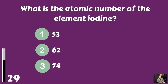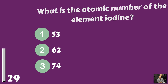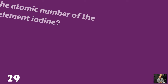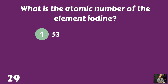What is the atomic number of the element iodine? Is it 53, 62, or 74? Right off the top of your head — the atomic number for iodine is 53.